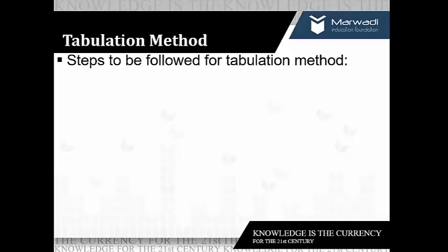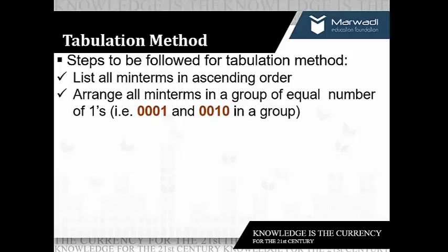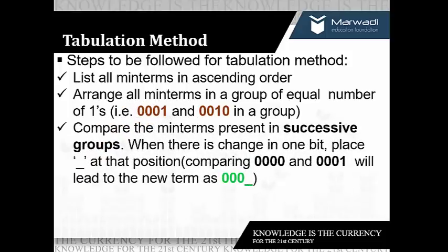The steps to be followed for the tabulation method: the first step is to list all the minterms in ascending order. The second step is to arrange all the minterms in groups such that each group comprises an equal number of ones. For example, 0001 and 0010 each comprising one '1' are placed in a group, and 0011 and 0101 comprising two ones are allocated in a single group.